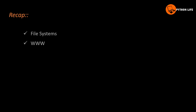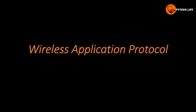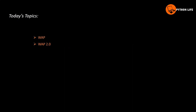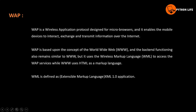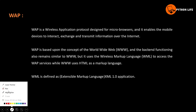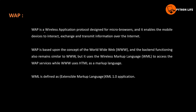Welcome to this lesson on Wireless Application Protocol (WAP). WAP 1.0 was the first application protocol designed for micro browsers. It enables mobile devices to interact, exchange, and transmit information over the internet, including data exchange, content access, and web page access.